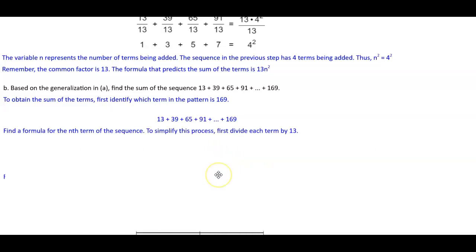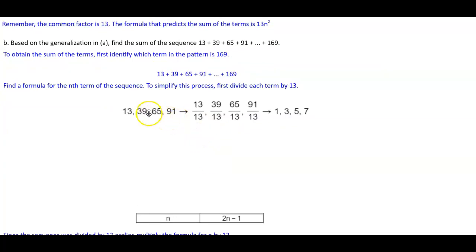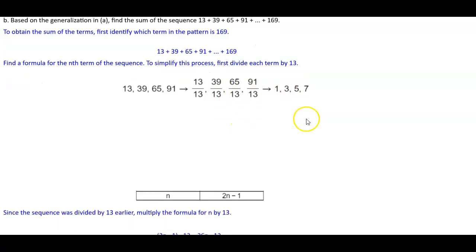We want to find the formula for the nth term of the sequence. To simplify this process, we're going to first divide each term in this sequence by 13. 13 divided by 13 is 1, 39 divided by 13 is 3, 65 divided by 13 is 5, and 91 divided by 13 is 7.